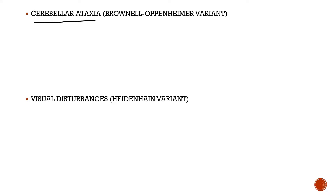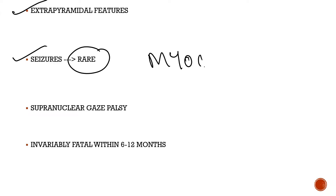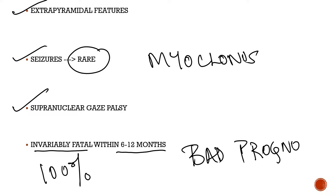There are specific CJD variants: when cerebellar ataxia predominates it is the Brownell-Oppenheimer variant, and when visual disturbances predominate it is the Heidenhain variant. Patients can have extrapyramidal features; seizures are rare though myoclonus itself is a form of involuntary movement. Supranuclear gaze palsy may occur. Importantly, CJD has 100% fatality — it is invariably fatal — with death occurring within six to twelve months.